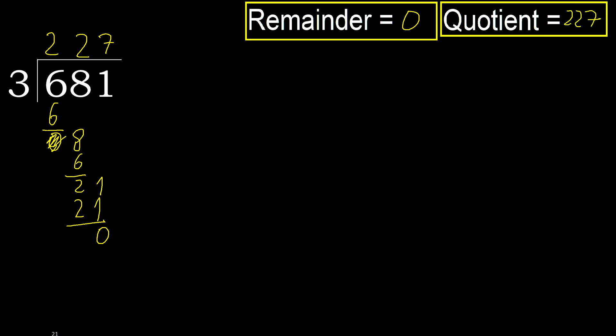Ok, therefore 681 divided by 3 is 227. Ok. 10 minutes. Thank you.